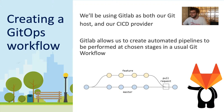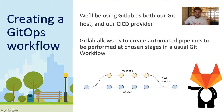GitLab allows us to create automated CI/CD pipelines to be performed at chosen stages in a usual Git workflow. You can see a visualization of a Git workflow here: you start on your master branch, create a feature branch, make your changes, and then create what's called a merge request. In this diagram it's listed as a pull request — pull requests and merge requests are just what different tools call the same thing. GitHub users are used to pull requests; GitLab users are used to merge requests.